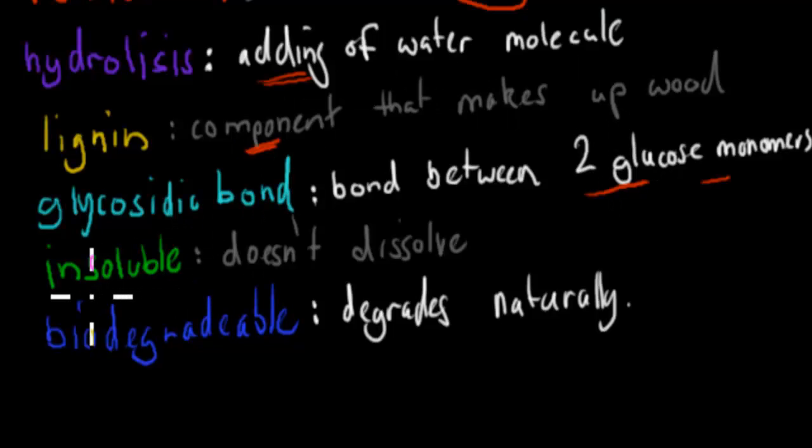Insoluble, that's the opposite of soluble. Soluble means it dissolves. Insoluble means it doesn't dissolve. And for example, we said cellulose does not dissolve in anything.